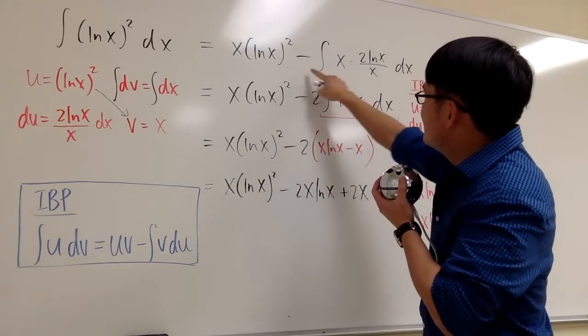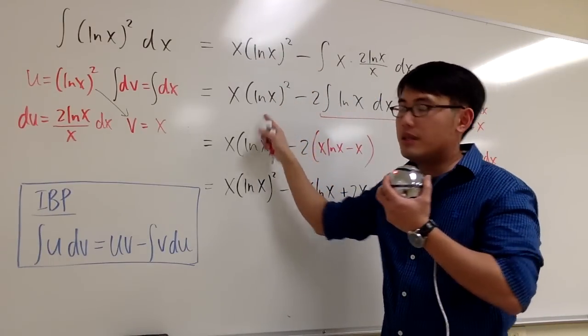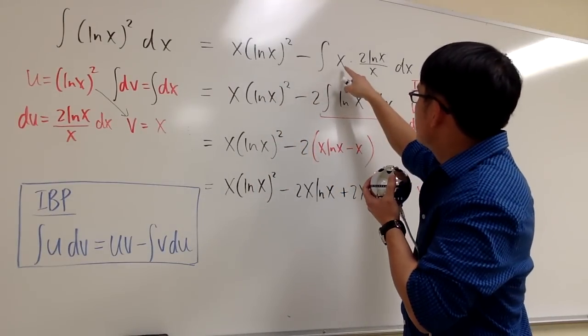So du right here, this is another integral that we have to do. This is going to be part of the answer already. Anyways, as we can see, we have the x times something over x.